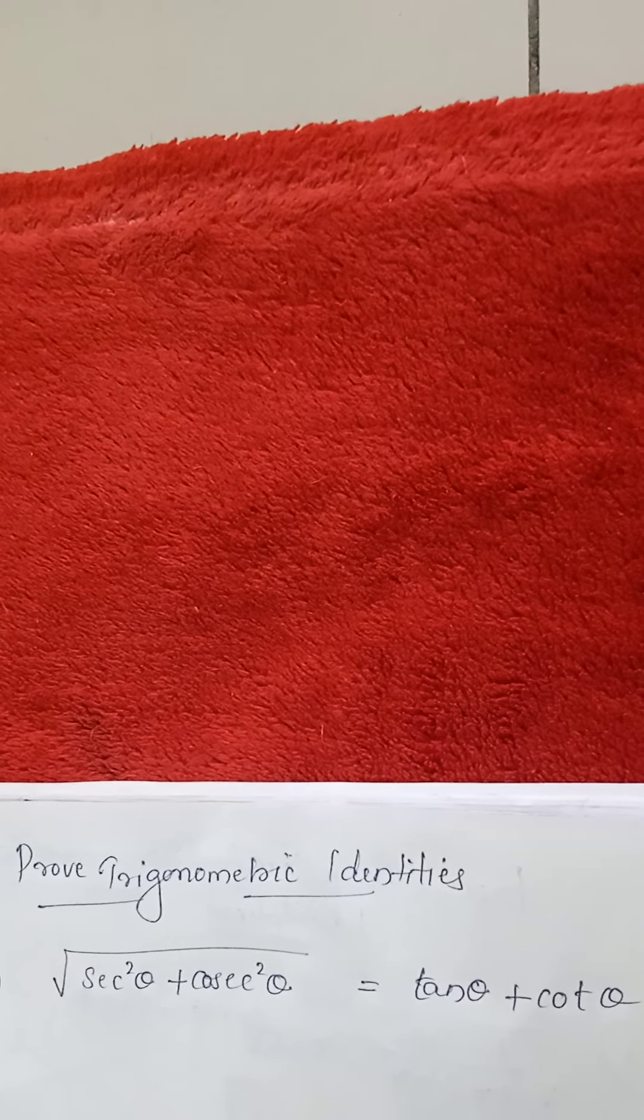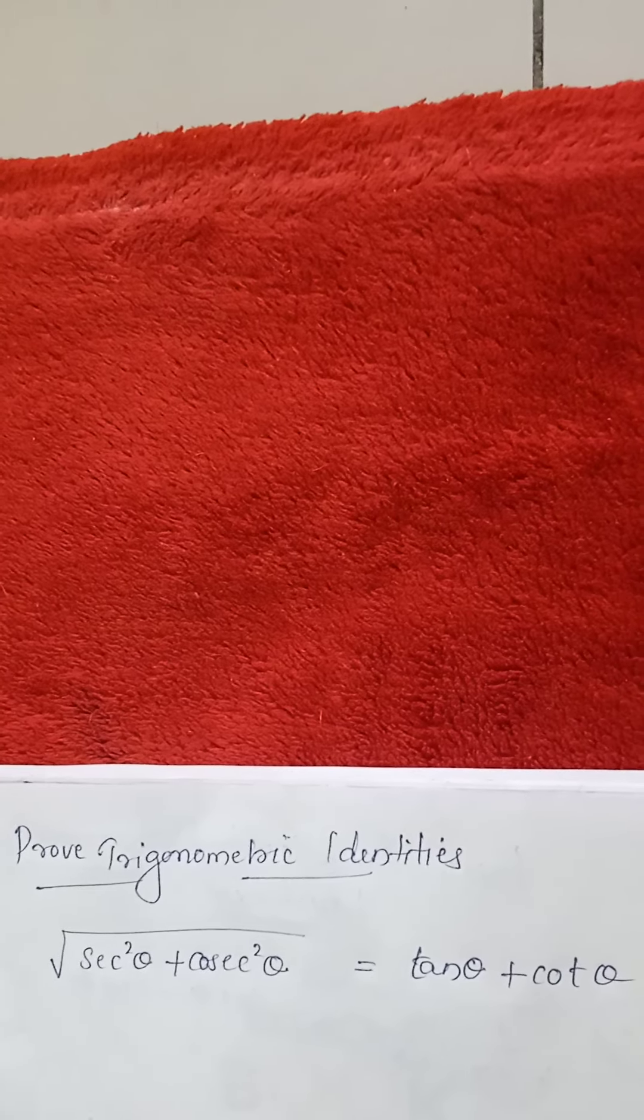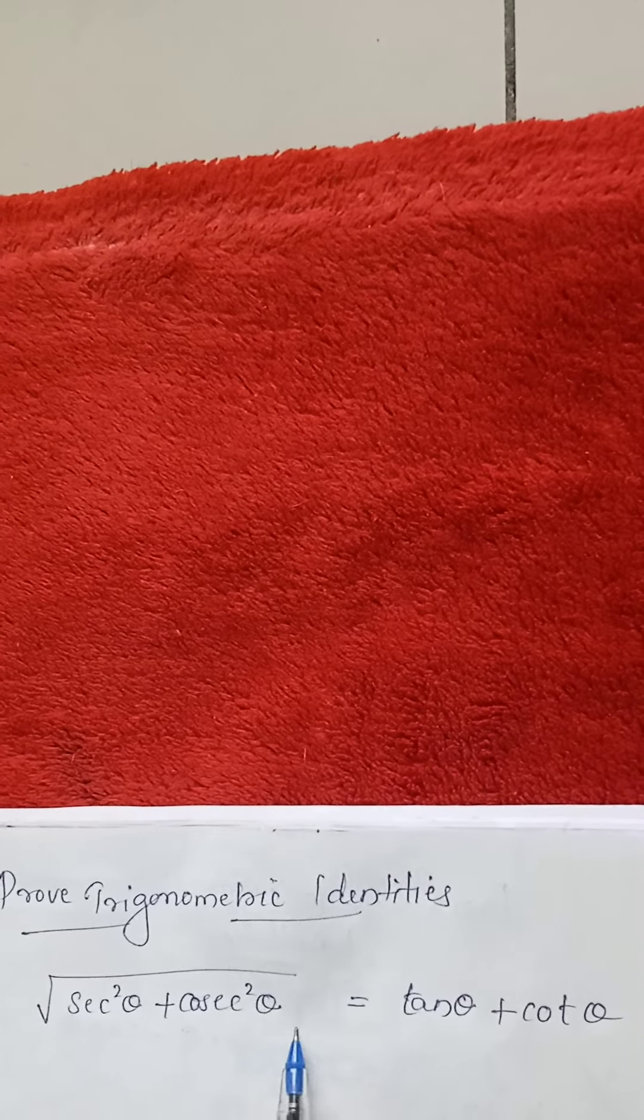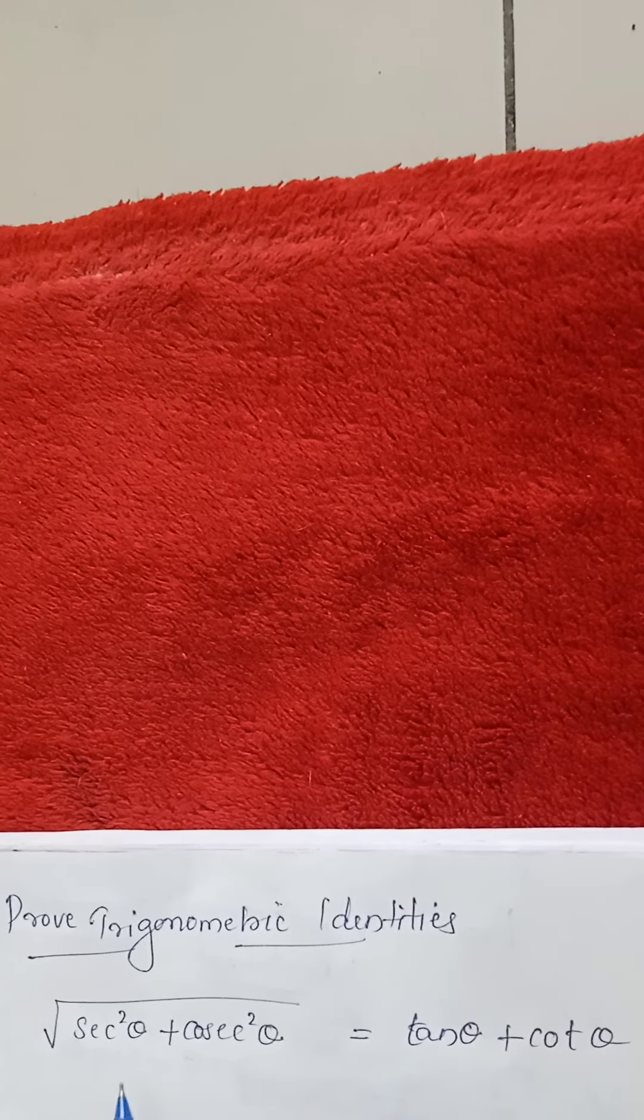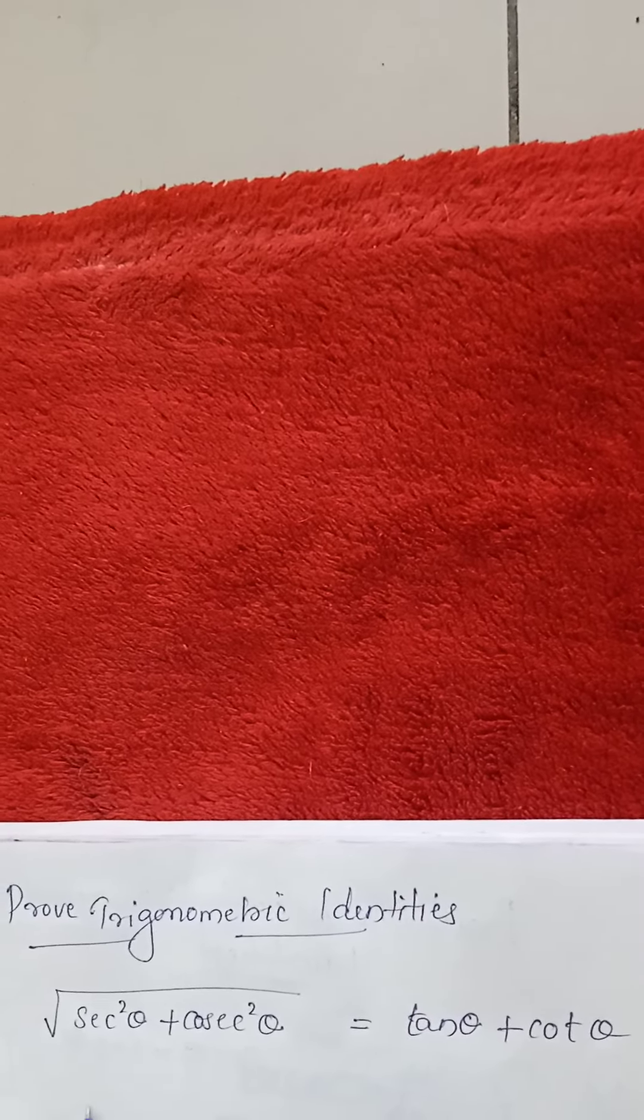Hi children, today we are going to study another question from the trigonometric identities. The question is here, root of sec square theta plus cosec square theta equals tan theta plus cot theta. This is LHS side and this is RHS side. We have to prove with the LHS side.